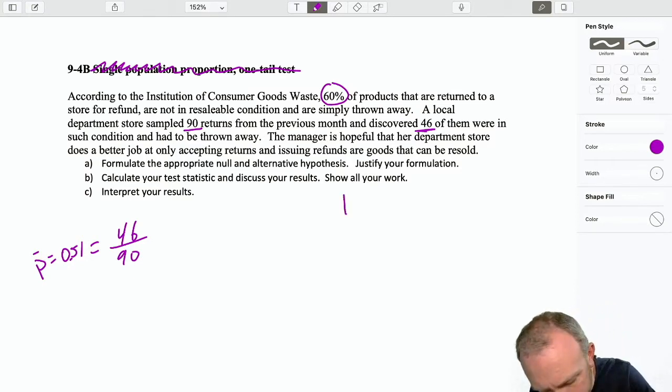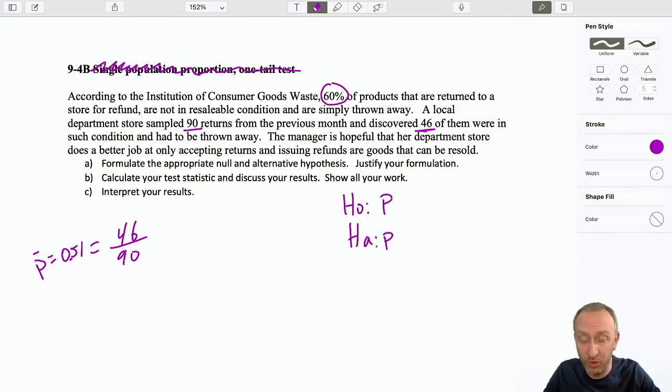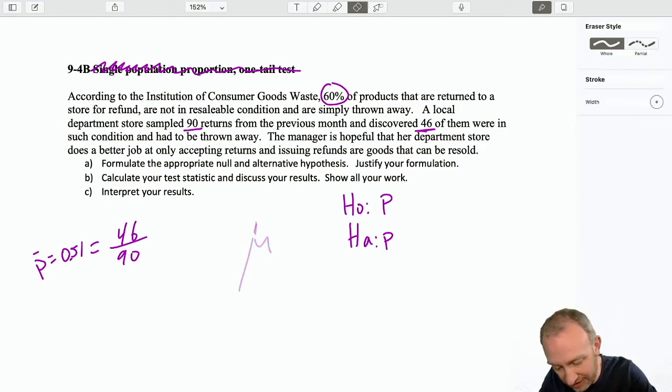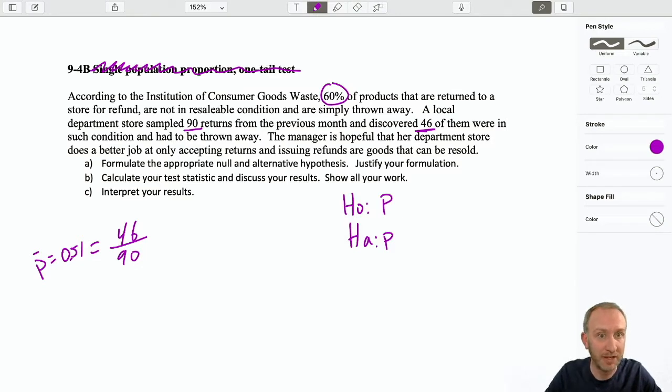So step one, formulate our test. Here again I'm going to use the letter p because we're testing proportions. This symbol mu means an average population mean. That's not what we're testing. It has no place in this problem. We're testing a proportion. Our hypothesized value is 60%. I always like to write these as a decimal. It just is more consistent with the calculations that we're going to have to do later.